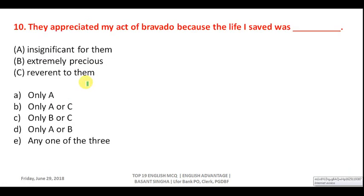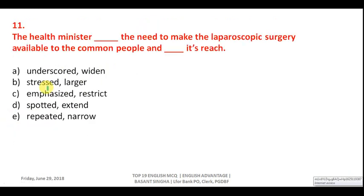Question ten: complete the sentence about an act of bravado. 'They appreciated my act of bravado because the life I saved was precious.' Saying 'this is insignificant for them' would be totally incorrect. Option B — 'extremely precious' — is correct. Option C — 'reverent to them' — if the life is extremely precious and reverent, an act of bravado would be appreciated. Answer is C, meaning B and C.